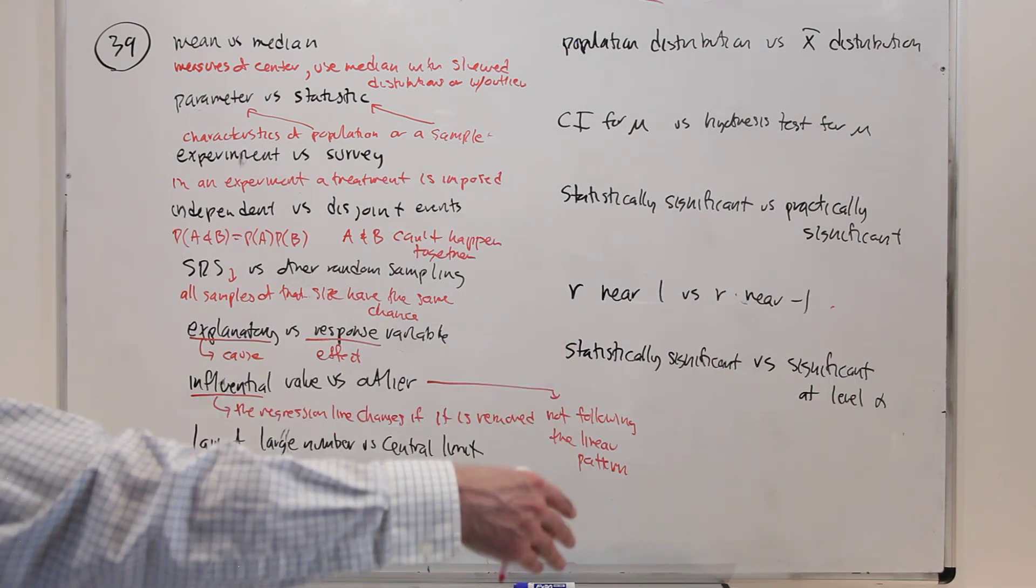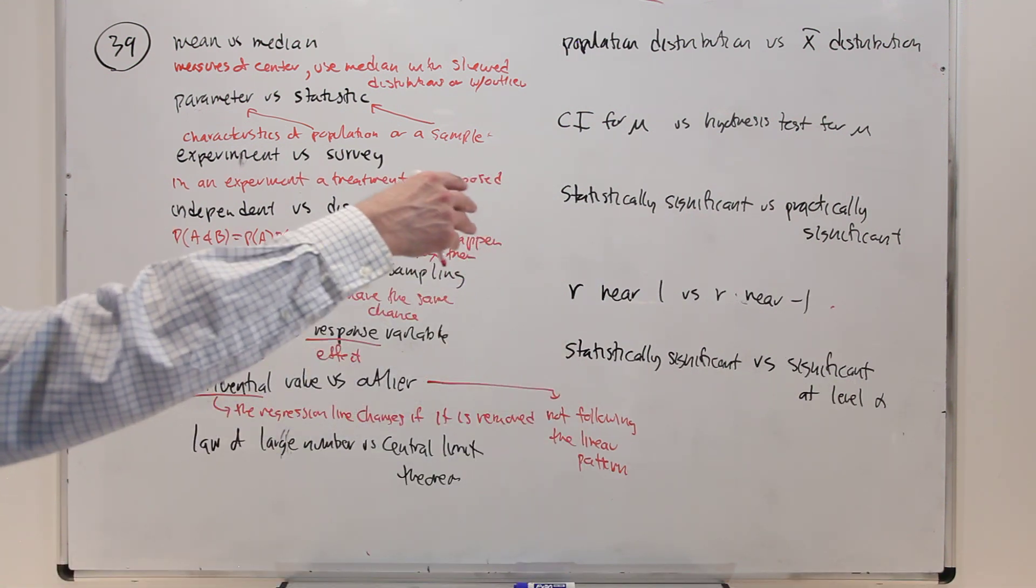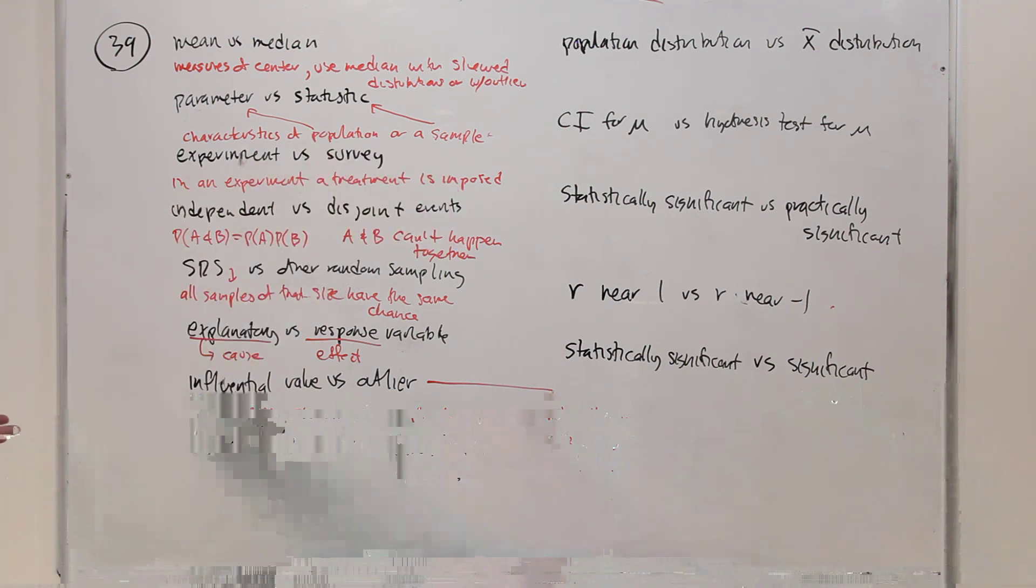So the influential values are the ones extreme in the x direction. So the ones near the boundaries of the data set that aren't part of the linear pattern. Then if you take them out, the line can move quite a bit. If those values are in the center of the data in the x direction, even though they're not part of the line, if you take them away, the line doesn't move very far.